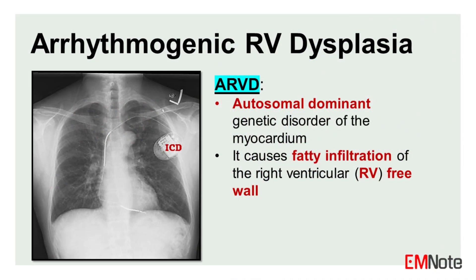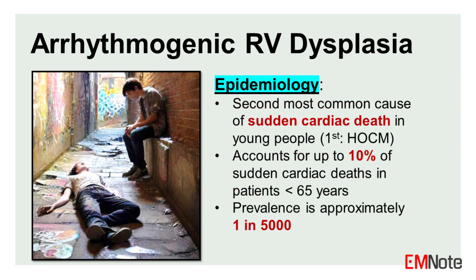Arrhythmogenic right ventricular dysplasia, ARVD, is an autosomal-dominant genetic disorder characterized by fatty infiltration of the right ventricular free wall. It predisposes patients to paroxysmal ventricular arrhythmias, sudden cardiac death, and biventricular failure. ARVD is the second most common cause of sudden cardiac death in young individuals, accounting for up to 10% of cases in patients under 65 years of age.